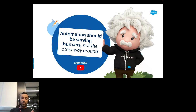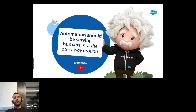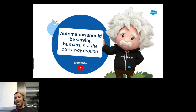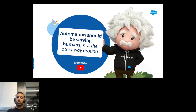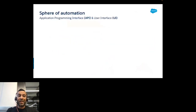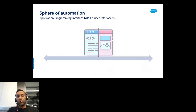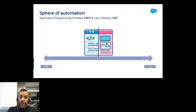My personal mantra: automation should be serving humans, not the other way around. If you look at the graph I was showing, you'll see that if you've shifted work from repetitive tasks into now really serving your automation and keeping it alive — that's where I say your automation journey has failed. It should be more stable and help free up limited resources on the business side.